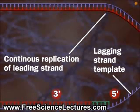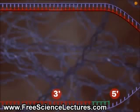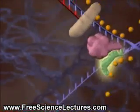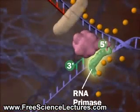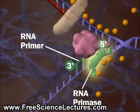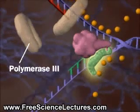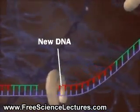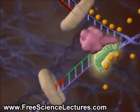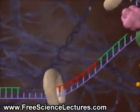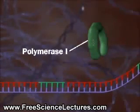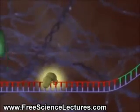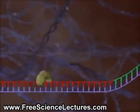The lagging strand has to form from 5' to 3' too. It forms in pieces called Okazaki fragments. First, an RNA primase lays down an RNA primer. Then, DNA polymerase 3 lays down new DNA. The process repeats again and again. DNA polymerase 1 replaces the RNA primers with DNA. Finally, DNA ligase links the Okazaki fragments.